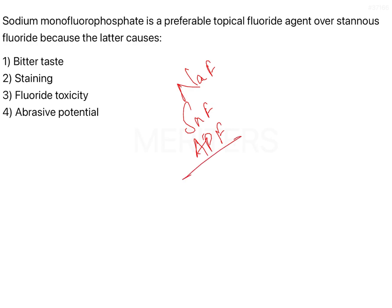APF is the most commonly used right now because it is easily available and can be easily made. Stannous fluoride has one disadvantage: it has to be freshly made every time because it cannot be stored for a long period of time — it reacts with glass or any medium it contacts. So it has to be freshly prepared.